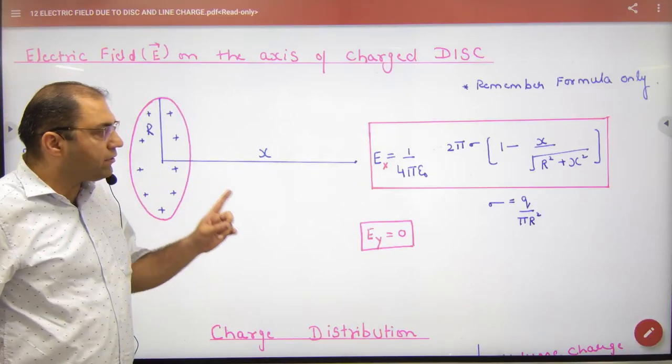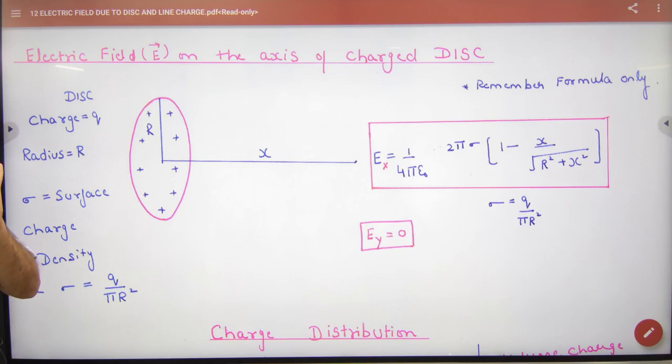Electric field E-vector on the axis of charged disk. Now, because it is a charged disk which has radius R, you have to find E on the axis.